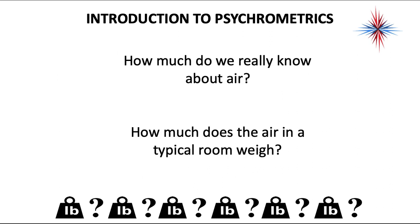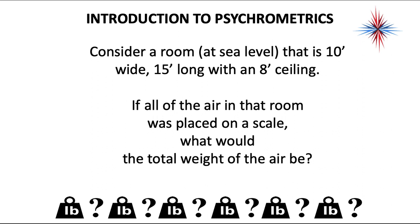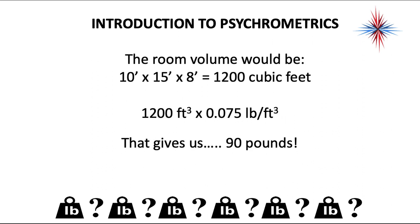What do we really know about air? How much does the air in a particular room weigh? Consider a room at sea level that is 10 feet wide, 15 feet long, with an 8-foot ceiling. If all of the air in that room was placed on a scale, what would the total weight be? We have to move air to cool and heat buildings, so the room volume is the first thing we calculate: 10 by 15 by 8 equals 1,200 cubic feet. 1,200 cubic feet times 0.075 pounds per cubic foot gives us 90 pounds. One cubic foot of air is 0.075 pounds.